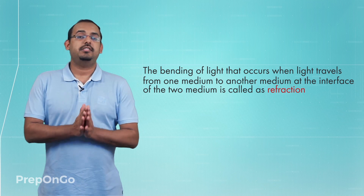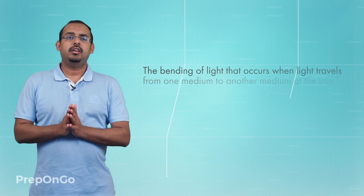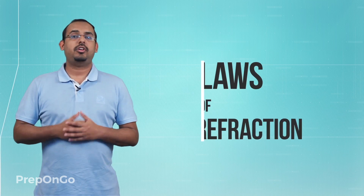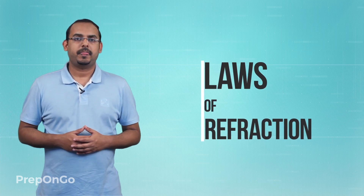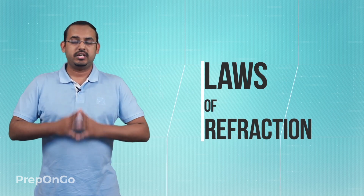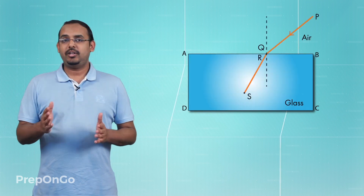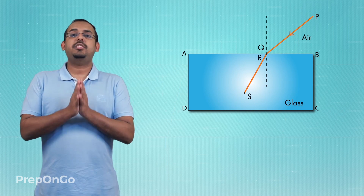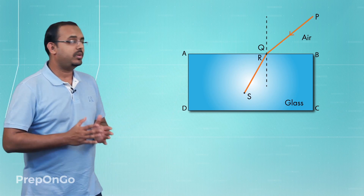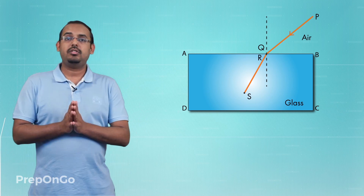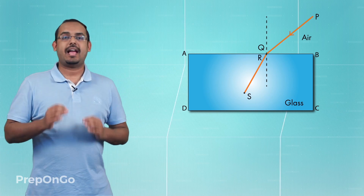Similar to the observations we have made, multiple other observations have also been made and some laws have been formulated which govern the study of refraction of light. These are known as the laws of refraction. Before we study the laws of refraction, we'll study some important terms. To understand these terms, we'll take into observation the interface at which refraction is actually happening — the rectangular face of the glass slab.